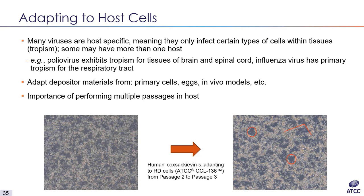Next, I will discuss the importance of adapting to the most beneficial host cell lines. Just because a virus can replicate and propagate in a cell line does not mean it will replicate and propagate well, which can lead to reproducibility issues. Many viruses are host-specific — meaning they only infect certain types of cells within tissue, a property called tropism. For example, poliovirus shows tropism for tissues of the brain and spinal cord, while influenza has primary tropism for the respiratory tract. Numerous viruses in our catalog, especially older items, are sent from depositors from primary cells, eggs, or in vivo models, and therefore need to be adapted to an ATCC cell line. MSET virology prefers to propagate viruses in host cells for at least three consecutive passages to ensure the virus is fully adapted.